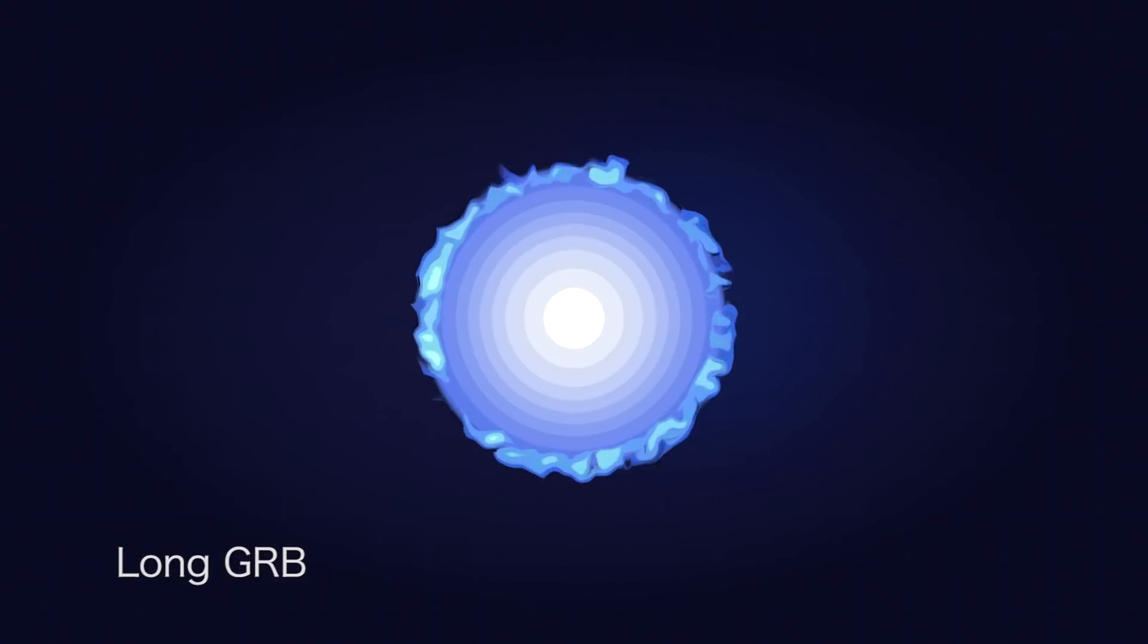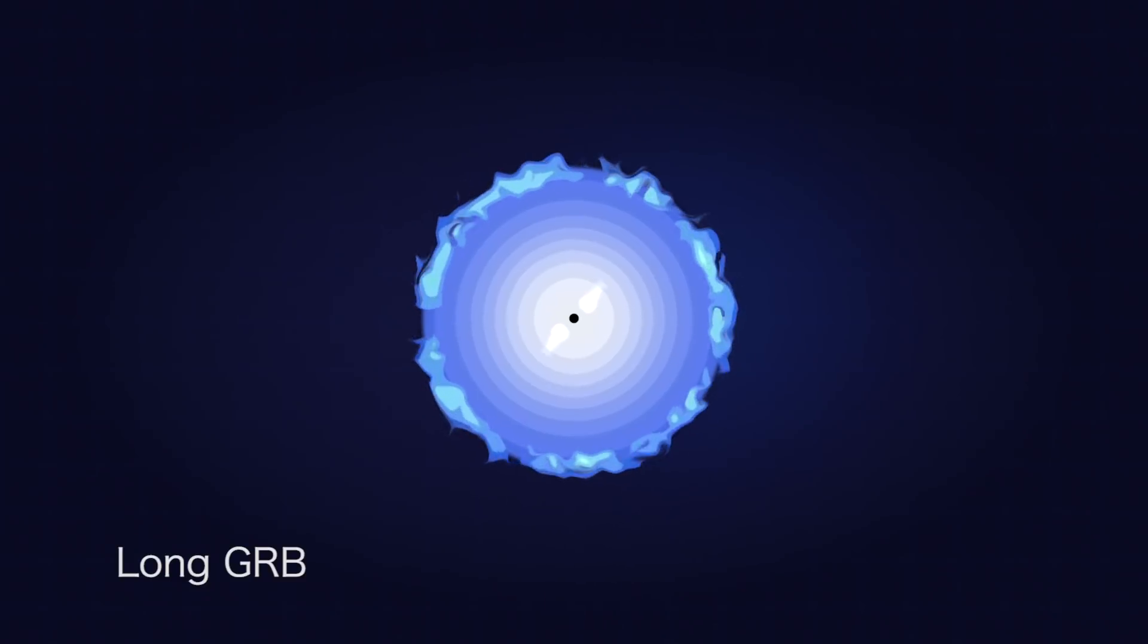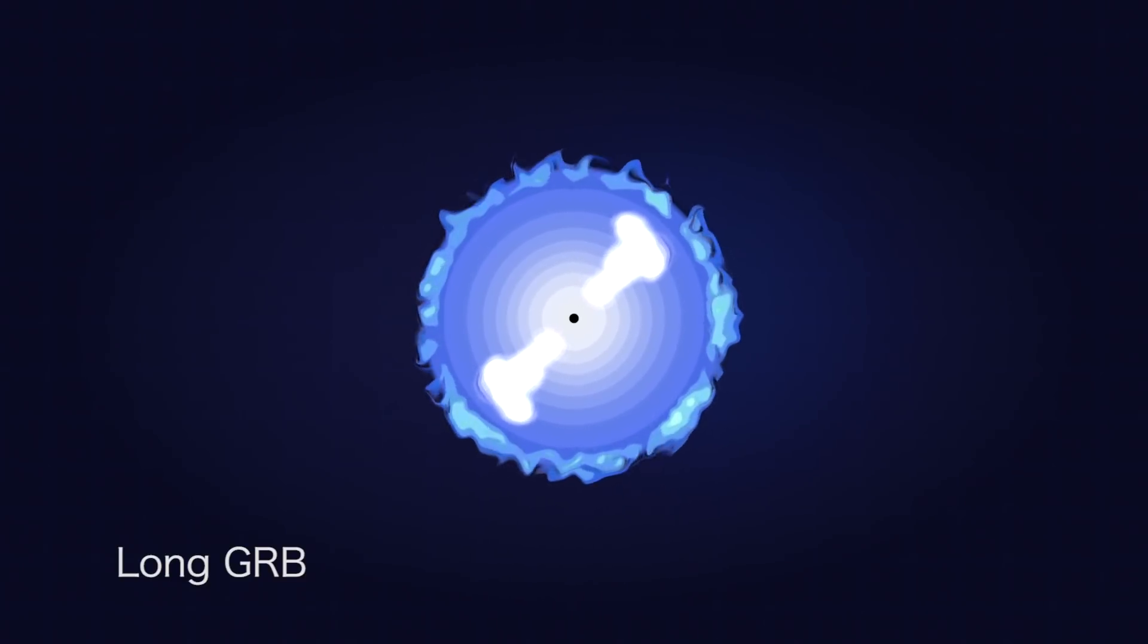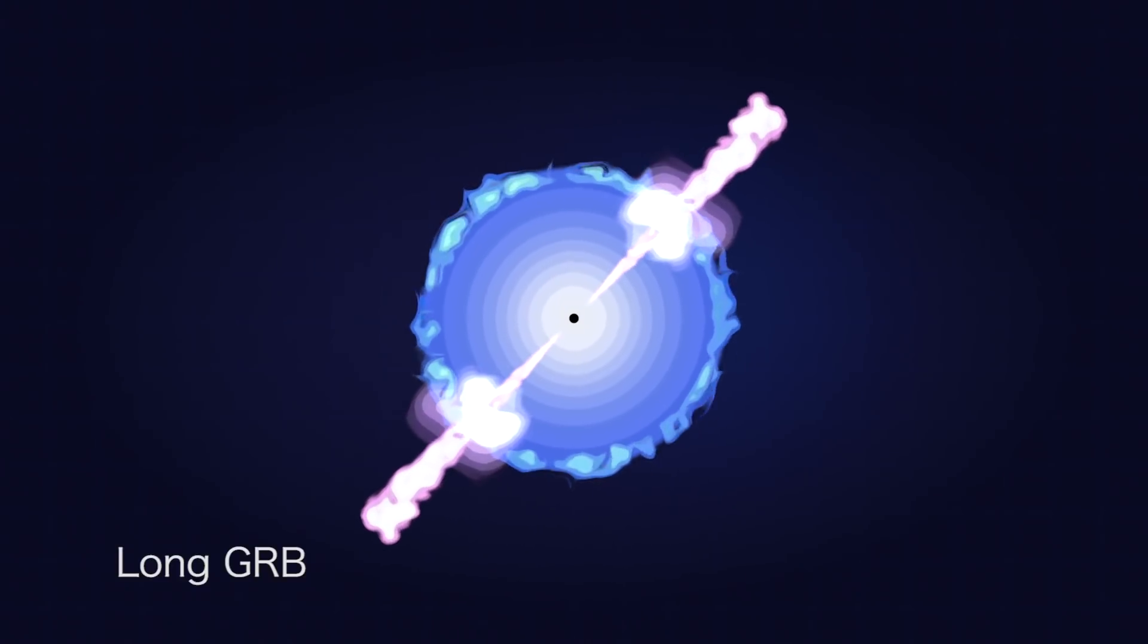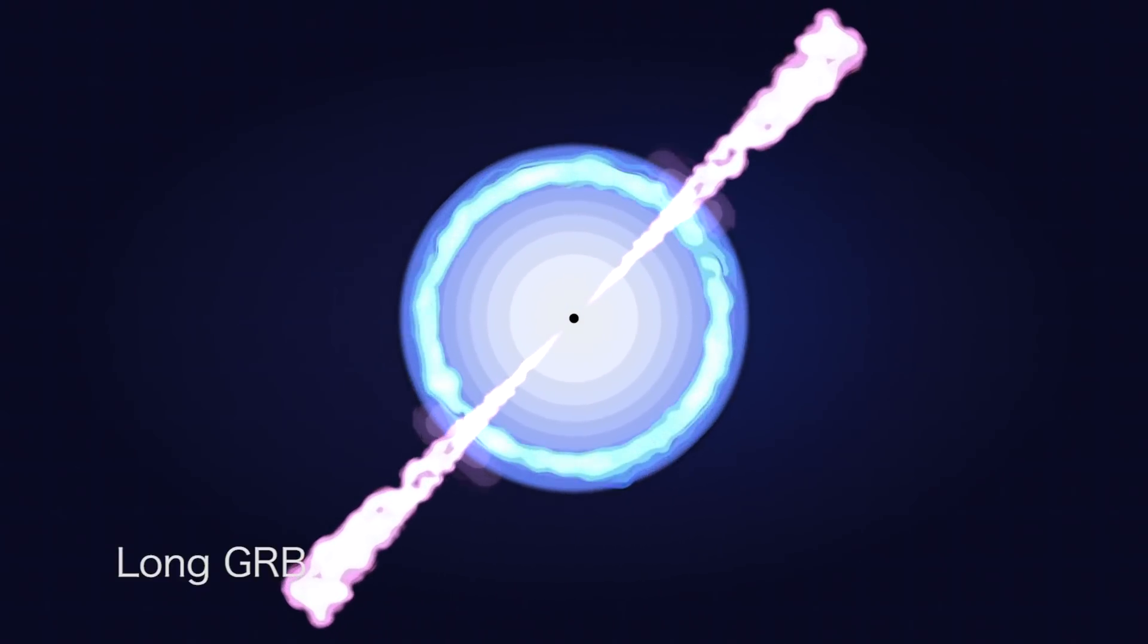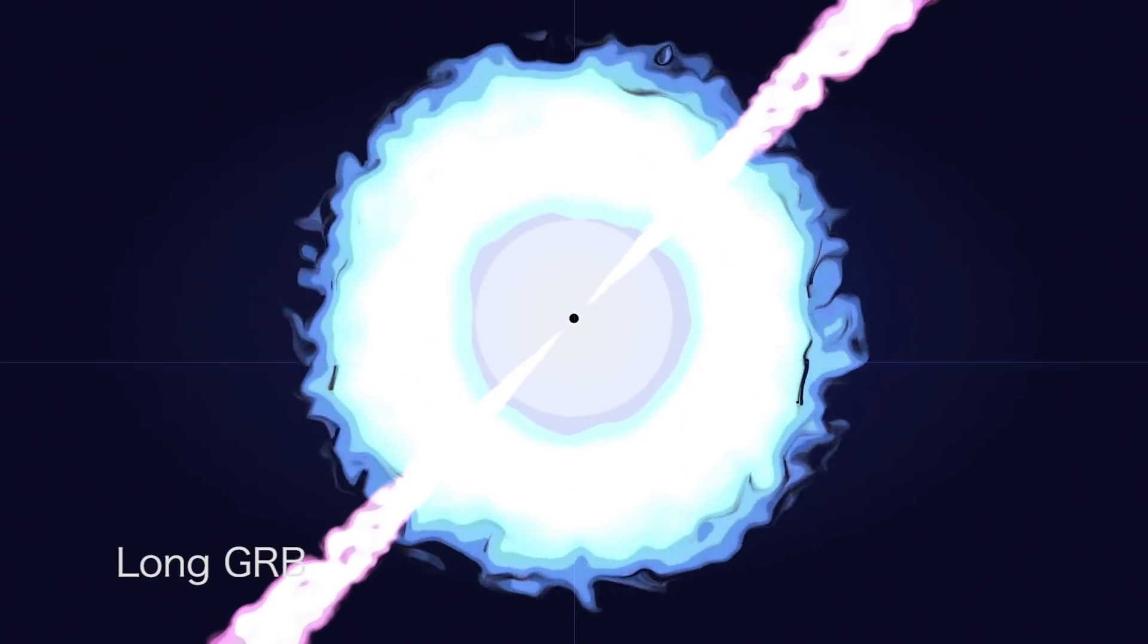Longer bursts come from massive stars at the ends of their lives. A black hole forms at the center of the collapsing star. It drives long-lasting jets that drill through the star, producing gamma rays when they emerge. The star then transforms into a supernova.